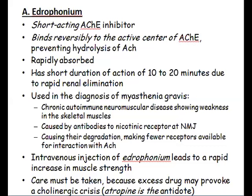This disease is treated by intravenous injection of edrophonium, which leads to a restoration of the skeletal muscle and a rapid increase in muscle strength. However, its administration should be monitored carefully, because if the patient takes excess edrophonium, it may cause a cholinergic crisis and the muscle will be in a prolonged state of contraction. To stop these side effects, atropine is given as an antidote.